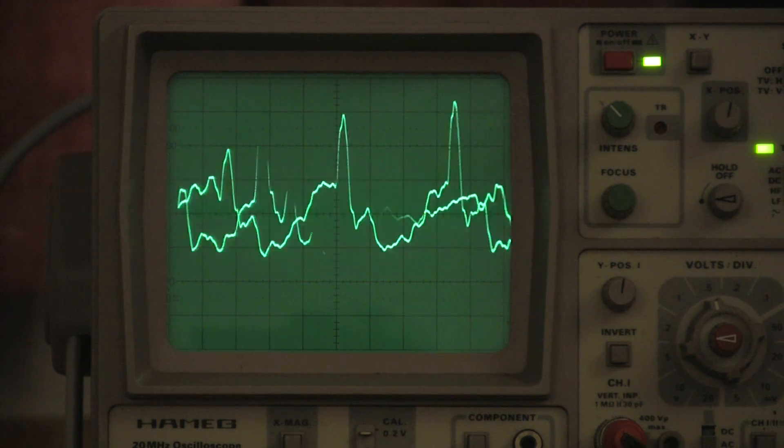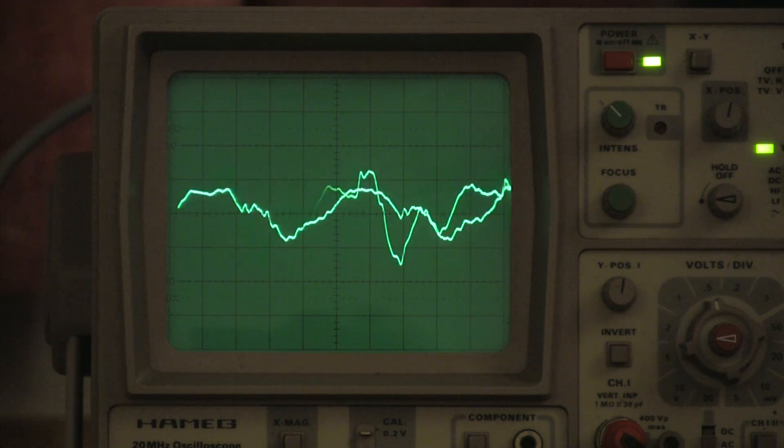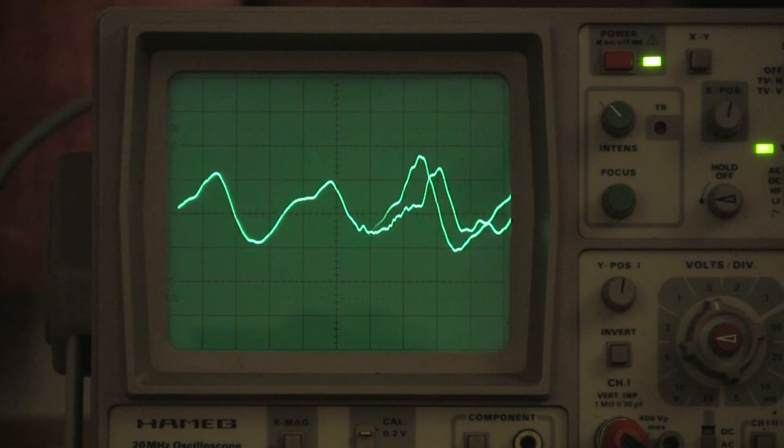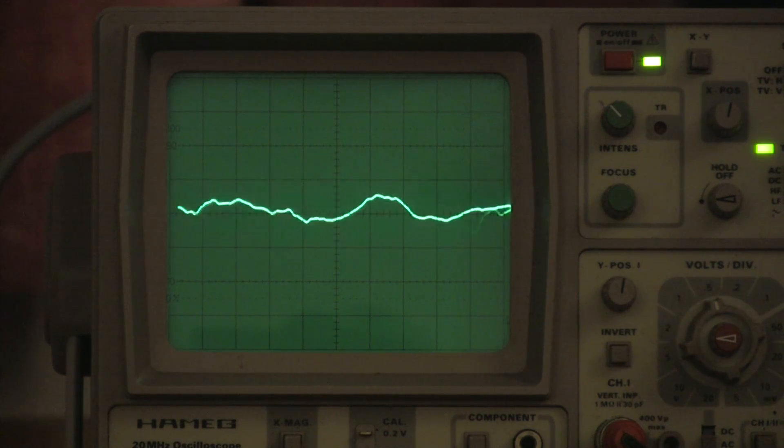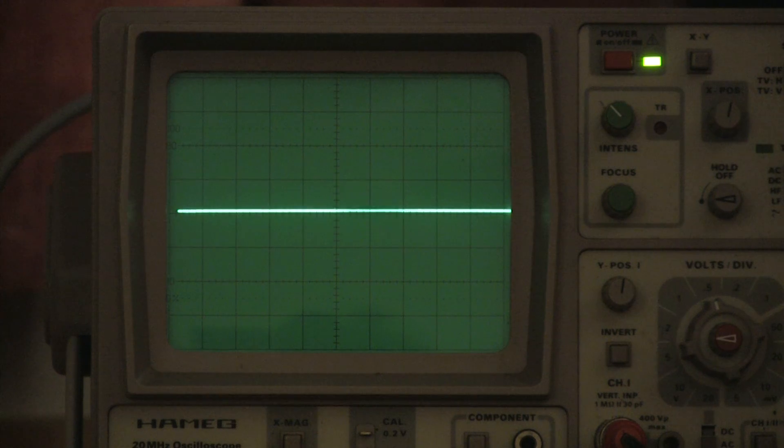So, in a 100 Hz square wave, you hear frequency components of 100 Hz, 300 Hz, 500 Hz, 700 Hz, and so on, all the way up the frequency band, as you can see in this spectrogram.